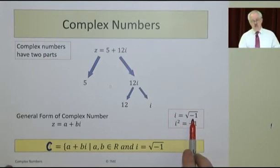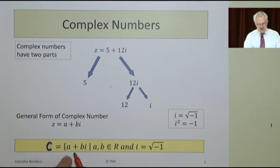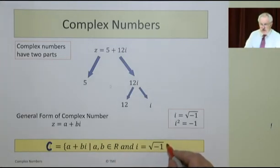i is defined as the square root of minus 1 and i squared is minus 1. Here's the general form of it in set theory. The set of complex numbers C is the set of numbers a plus bi where a and b are real and i is the square root of minus 1.